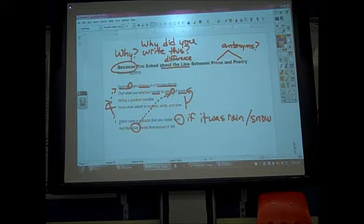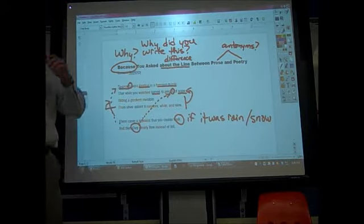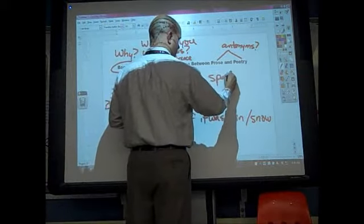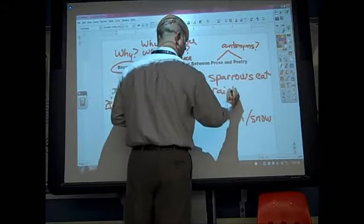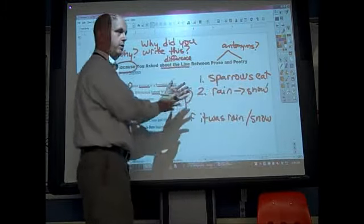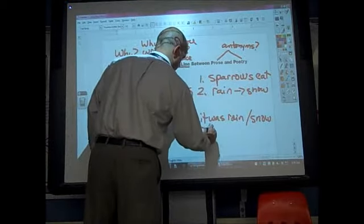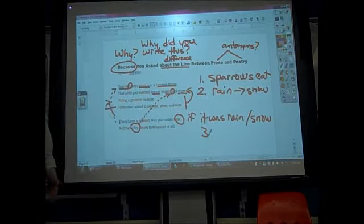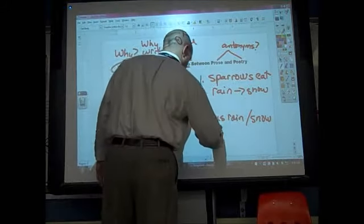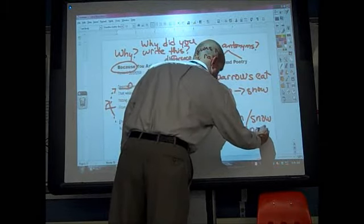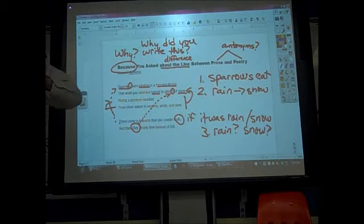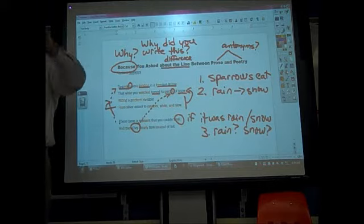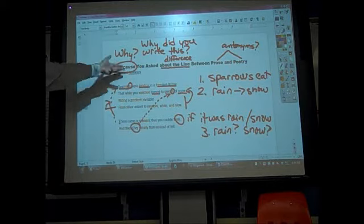So what I get from this is the following. In the first stanza, we're talking about one, sparrows eat. Two, rain becomes snow. That's really what's going on. The second half, number three. What's going on? I'm referring back to here and I can't tell, is it rain or is it snow? So I've figured out what's going on in this poem physically. Sparrows are eating. While I watch them eat, this freezing rain turns to snow. And there's a moment when I can't tell whether it's rain or snow. But I'm still wondering, what the heck does this have to do with poetry and prose?